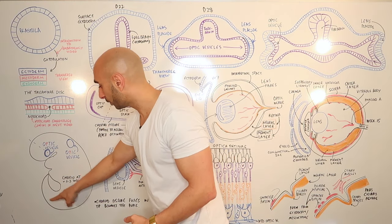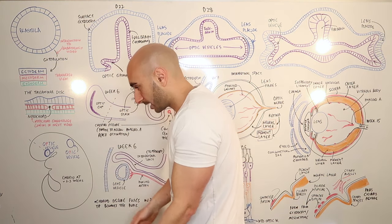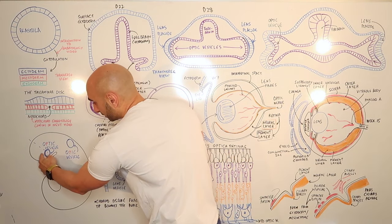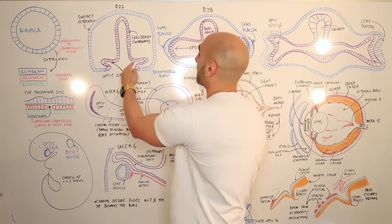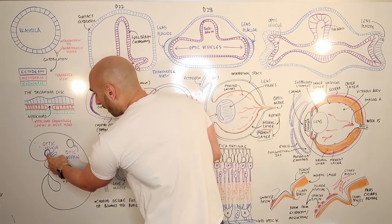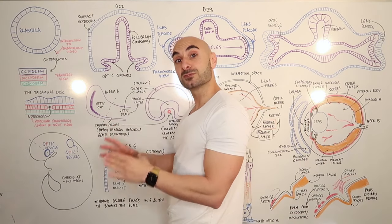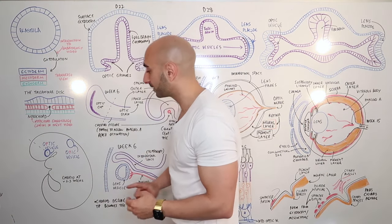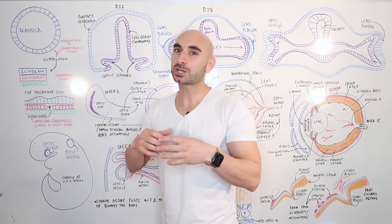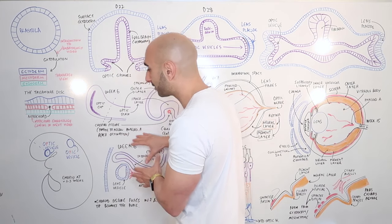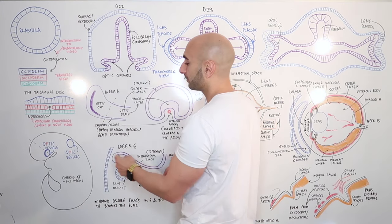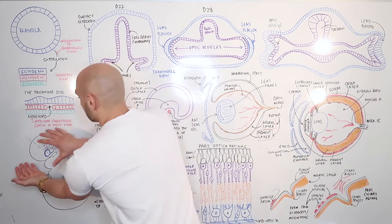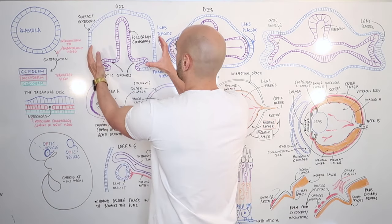Around day 22, if we look at this embryo curled up and we slice it at the optic vesicle region, we'll see the optic vesicle. There's also an otic vesicle — not to be confused with the optic vesicle — which is the subject of ear development. For now let's only focus on the optic vesicle.